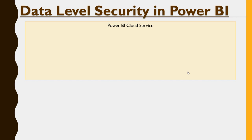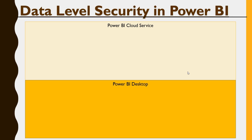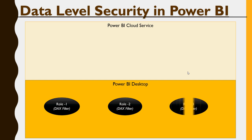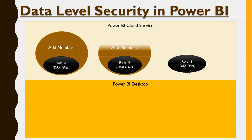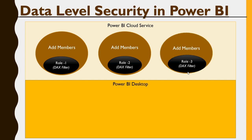You have the Power BI cloud service and the Power BI desktop, which is your on-premises development environment. You will create three roles: role one for US, role two for UK, and role three for India. For the CEO, you leave it open. You use DAX filters to limit the data set for each role. When you publish the PBIX file to the cloud service, you add members to all three roles, and those members will see only their respective data. That is the complete implementation of data level security in Power BI.